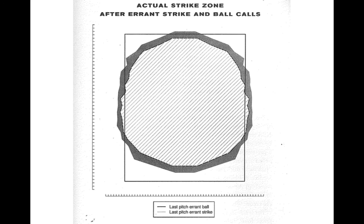Psychology plays a role in baseball. One example is with umpiring. We have here a plot of the strike zone, and also a measure of the strike zone as measured by the calls of umpires. These particular strike zones reflect the strike zones after a missed pitch — a pitch that was in the strike zone but was called a ball, or a pitch outside the strike zone that was called a strike.